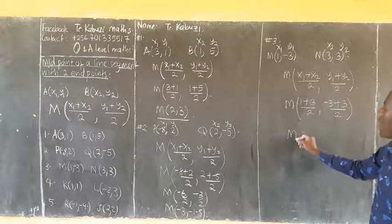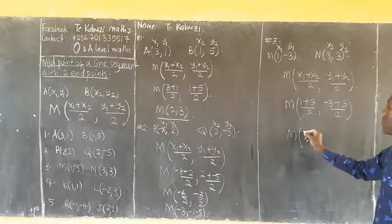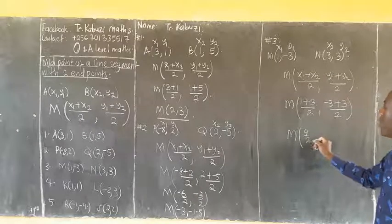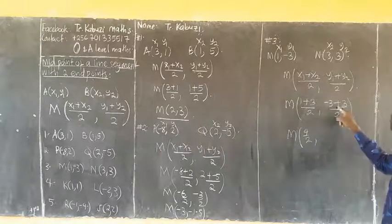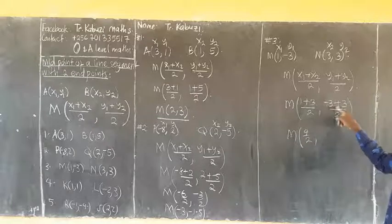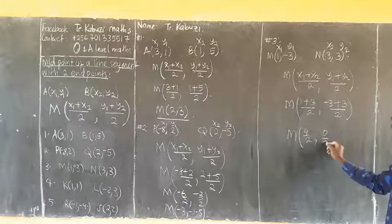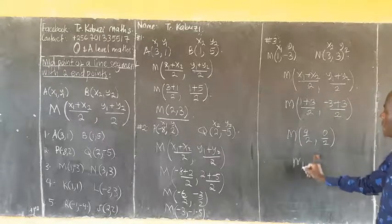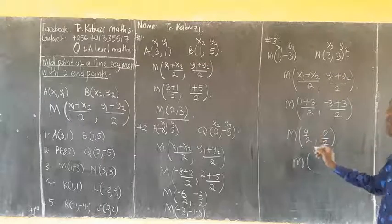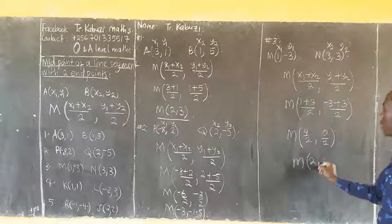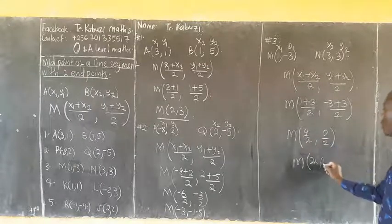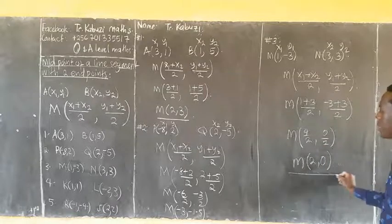So my midpoint here is going to be 1 plus 3, that's 4, divided by 2, comma, negative 3 plus 3, that's 0, divided by 2. So my midpoint here will be 4 divided by 2, you get 2, 0 divided by 2, you get 0. So that's the midpoint (2, 0).